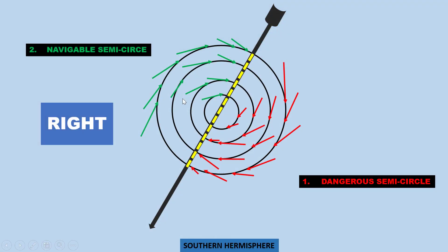This is the right of the path as it is going. In the southern hemisphere, winds turn clockwise, and in the northern hemisphere, winds turn anti-clockwise.